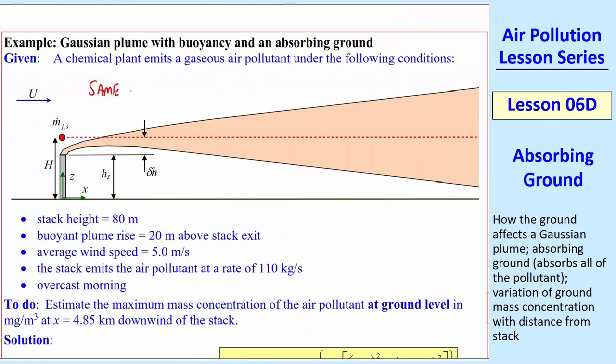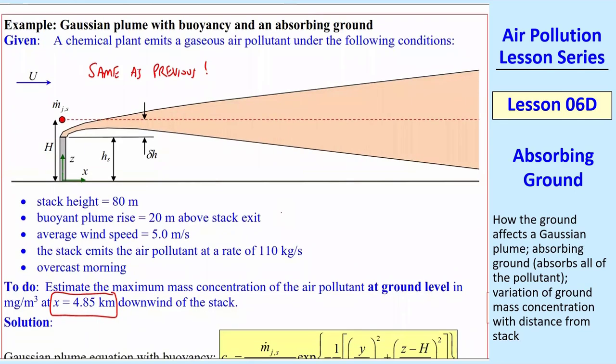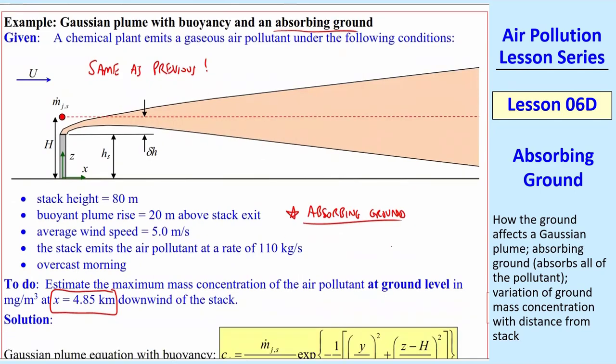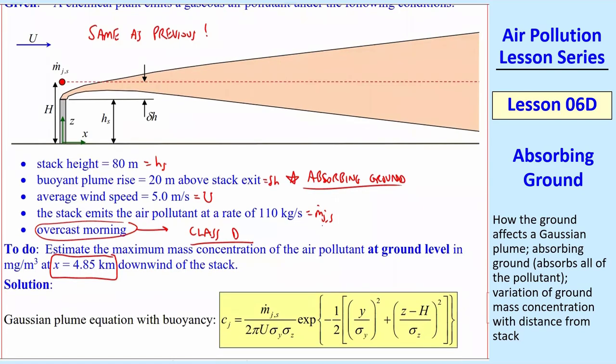So the same equation we had before, just use it. You've already had done some practice with that one. We've already done an example problem. Let's do another example problem. In fact, this is the same as the previous example from the previous lesson. The only difference is that we're using a different x. So back then we were like less than a kilometer, pretty close to the stack. Here we're far downstream, almost five kilometers downwind of the stack. And this is an absorbing ground. Later we'll deal with reflecting grounds or non-absorbing grounds. These are the same values we had previously for our previous example. So this was hs, the stack height. This was delta h, the plume rise, elevation. This is capital U. This is m.js. Overcast morning, same as we had before in our Martin model. This was class D. And so we know how to calculate those sigmas.